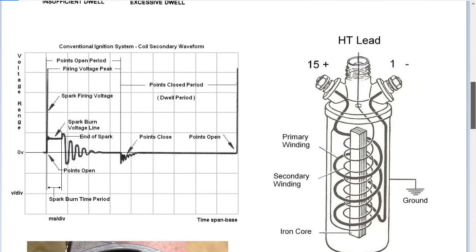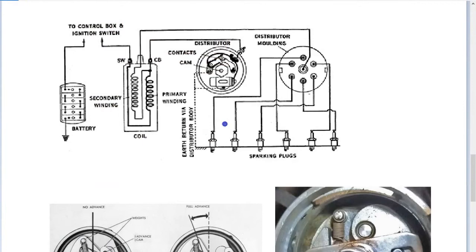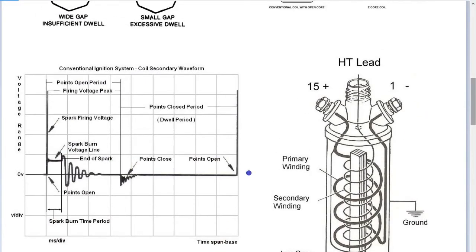What we used to use is an oscilloscope like this. It would have an inductive clamp on the number one cylinder for timing, an inductive clamp on the coil lead for the total voltage, and a clamp on the circuit breaker. The high tension lead on number one and the coil lead were essentially picking up a scope pattern expressed as voltage.